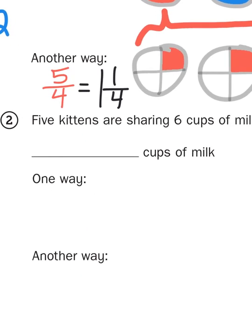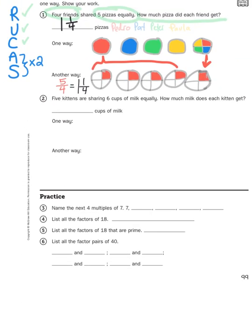All right, try problem number two on your own: five kittens sharing six cups of milk equally. Then take some time to review the concepts of multiples and factors — we just finished our Unit 2 test which explored that concept thoroughly, and it doesn't hurt to get in a little practice. If you have questions, feel free to reach out to your math teacher. Otherwise, we will talk again soon. Thanks, friends. We'll see you next time.